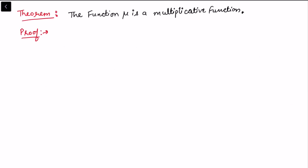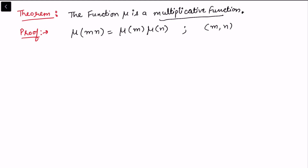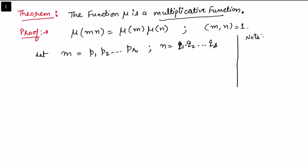The first property of the μ function is that it is a multiplicative function. This means μ(mn) = μ(m)·μ(n) whenever gcd(m, n) = 1. To show this, consider m and n in general form: let m = p₁·p₂·...·p_r and n = q₁·q₂·...·q_s. Whenever m = 1 and n = 1, μ(mn) = μ(1) = 1 = μ(1)·μ(1), so both sides trivially agree.